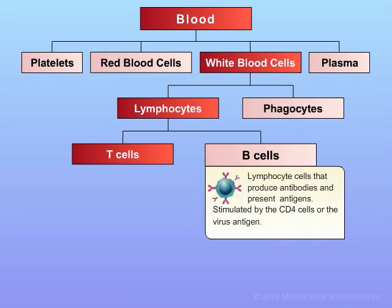The B cells, or B lymphocytes, are cells that produce antibodies. These cells are also among those that can present antigens to the T cells, and they are stimulated by the CD4 lymphocyte population and by viral antigens.